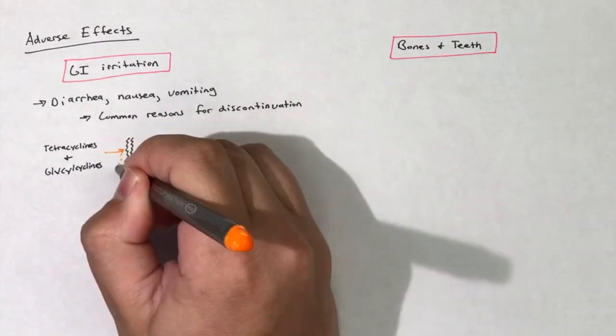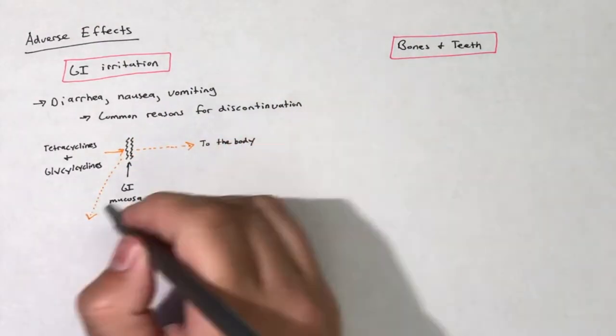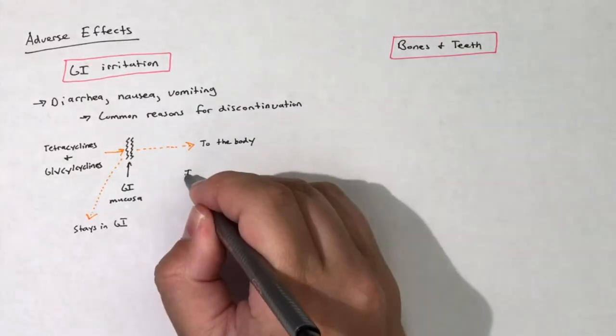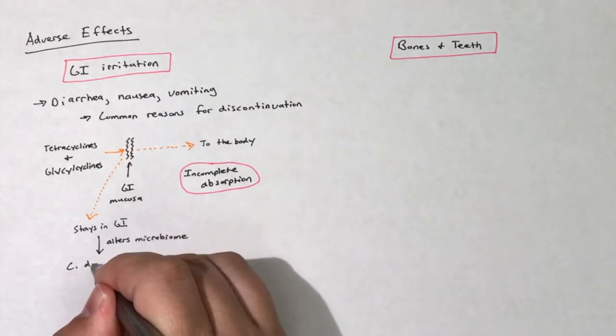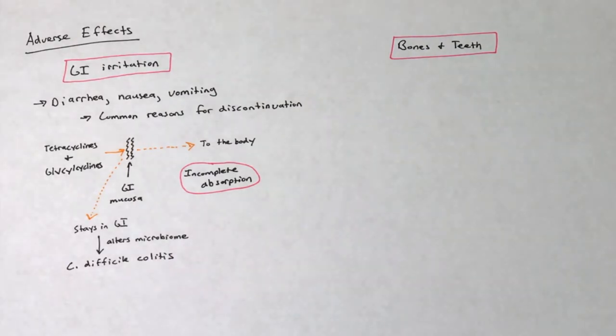Many of the tetracyclines are incompletely absorbed from the GI tract, and the unabsorbed fraction can alter the intestinal microbiome. This can place the patient at risk to develop C. difficile-associated colitis.